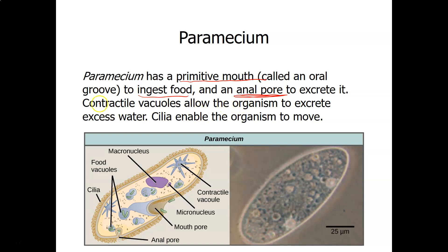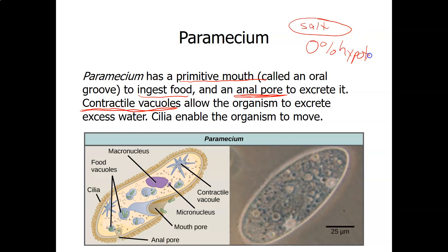The paramecium also has a contractile vacuole. Inside the paramecium there is a low salt concentration, but it lives in fresh water, which is nearly zero percent salt — a hypotonic environment. In a hypotonic solution, water moves into the cell toward the higher salt concentration. Without the contractile vacuole to expel excess water, the paramecium would burst.